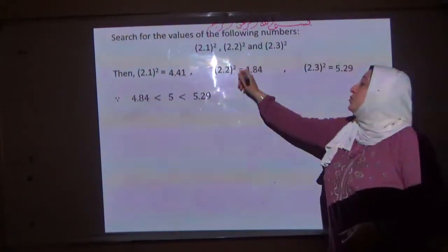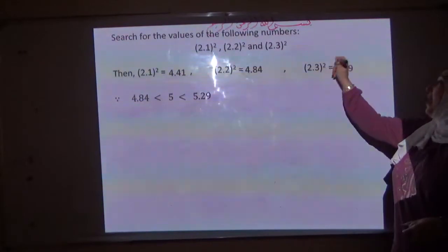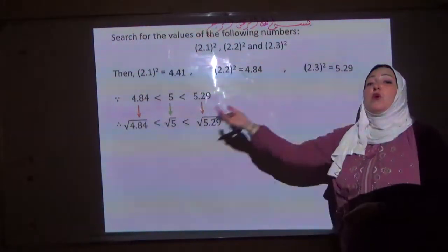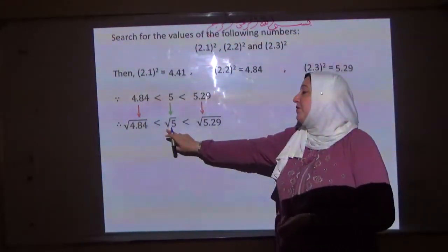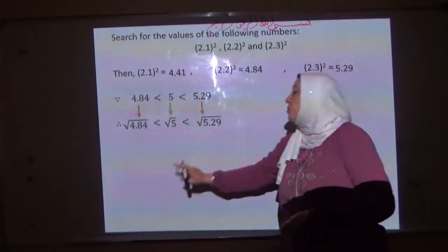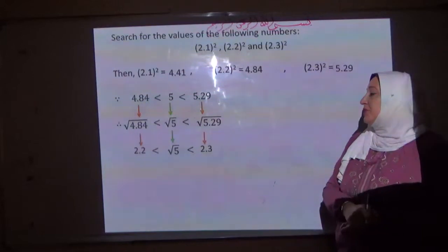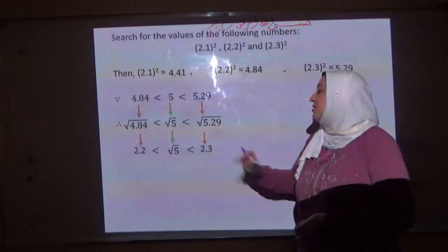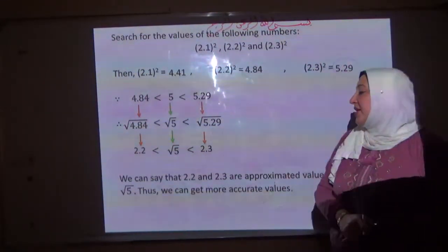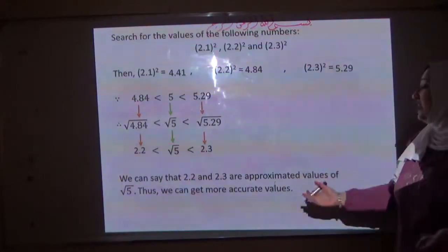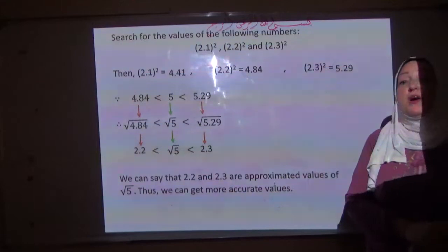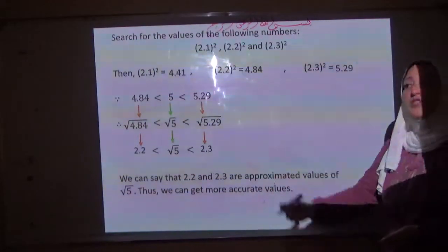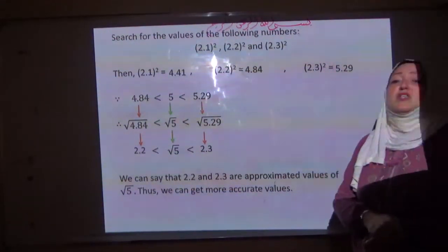Then 5 lies between 4.84 and 5.29. Taking the square root of all values, root 5 is more than root 4.84 and less than root 5.29, meaning root 5 is more than 2.2 and less than 2.3. We can say 2.2 and 2.3 are approximated values of root 5. We can get more accurate values by trying 2.21, 2.22, 2.23, and so on.